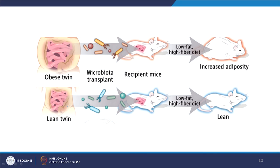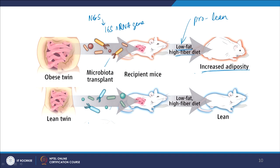Similar experiments are being done in human beings. Taking two twins — one obese and one lean — we know that the microbes in the obese twin are different from those in the lean twin, confirmed using next-generation sequencing on the 16S rRNA gene. When we took the microbial community from the obese twin and put it in a healthy recipient rat fed a low-fat high-fiber diet — a pro-leanness diet — the rat still developed increased adiposity and became fat. When we took microbes from the lean twin and put them in a mouse fed the same diet, the mouse remained lean and healthy. Even in human beings, our microbial community will decide our body mass index.